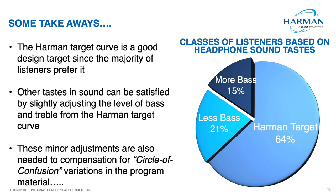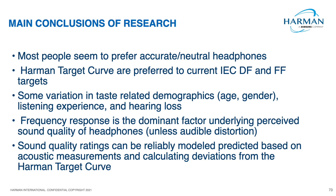To summarize our headphone research: most people prefer accurate, neutral headphones, just as they prefer accurate and neutral loudspeakers. The Harman target curve is preferred over current IEC diffuse field and free field standards. We observed some variation in taste related to demographics — age, gender, listening experience, and hearing loss — but nothing that can't be mostly satisfied by the Harman target. Non-linear distortion was generally not a significant factor; frequency response is the dominant underlying factor of perceived sound quality. Two models reliably predict preference ratings based on acoustic measurements and deviations from the Harman target.